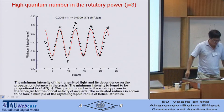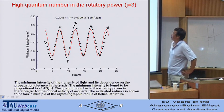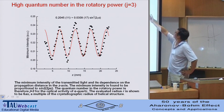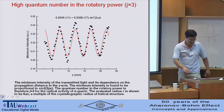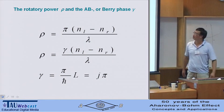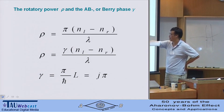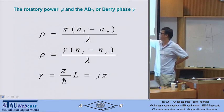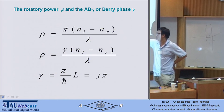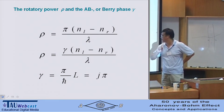We see that the quantum number for the optical activity is j equal to 3. The rotatory power is proportional to the AB phase gamma, and the AB phase is proportional to the angular frequency.